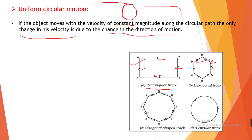So, if we continuously increase the number of sides — 8, 9, 10, 100, 200, 1000 times — and keep changing the direction, then what will happen? We will get a particular circle. In this circular track, the direction is continuously changing at every point.